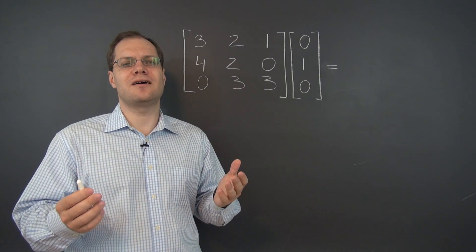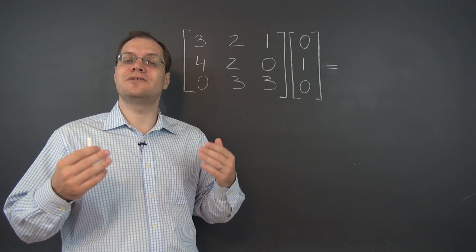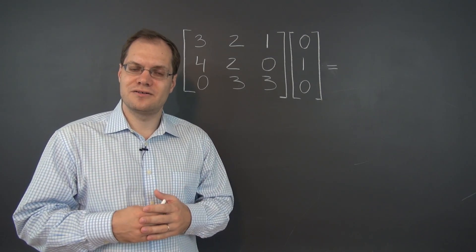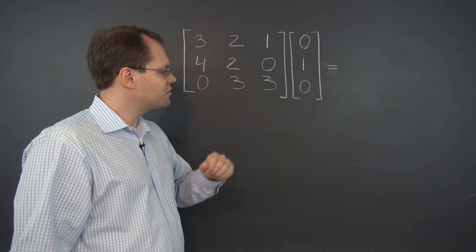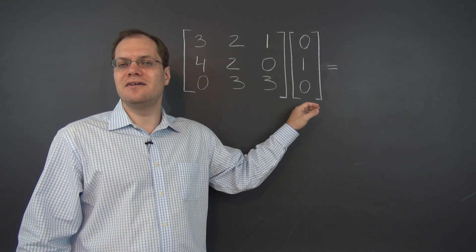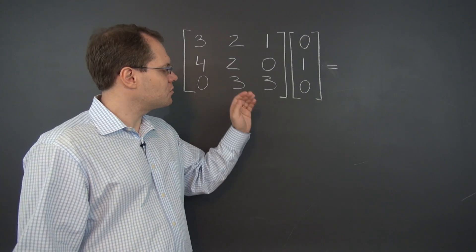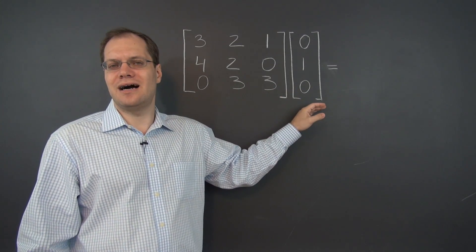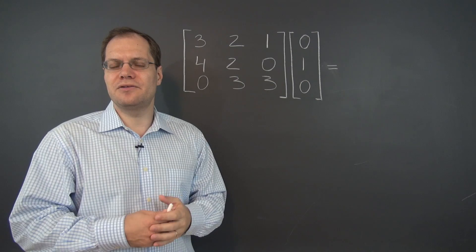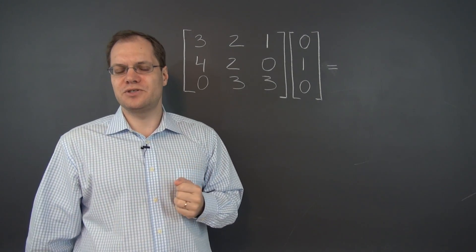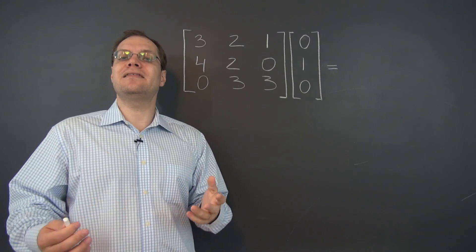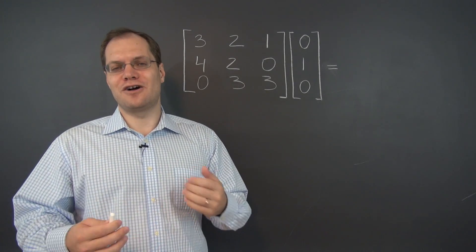Now before we talk about larger points, I think it's important that you get a little bit of practice under your belt. So before you watch this video, I think it would be best if you already considered between five and ten simple matrix products where you multiply a matrix by a single column, maybe a couple three by three examples and maybe a single four by four example and a bunch of two by two examples, and then I think you'll be ready to talk about larger points.